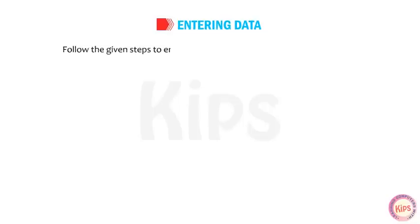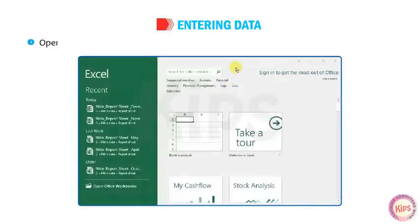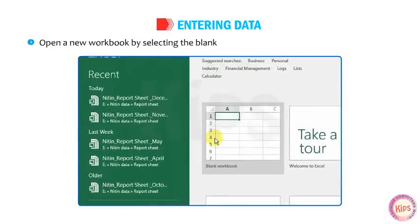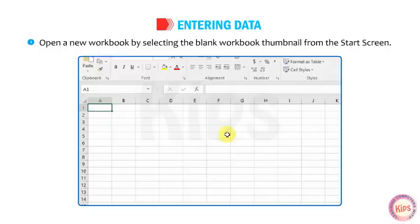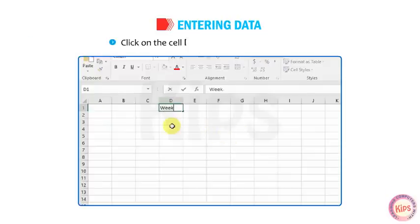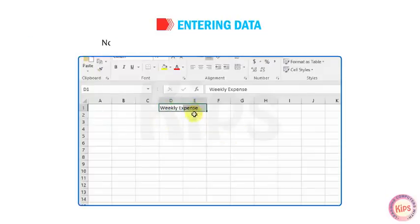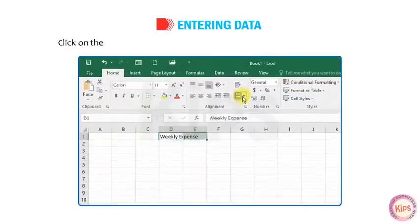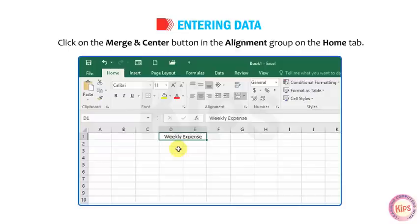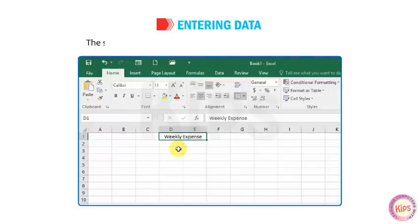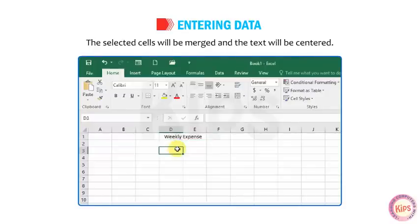Let us learn how to enter data. Follow the given steps to enter data in a worksheet. Open a new workbook by selecting the blank workbook thumbnail from the start screen. Click on cell D1 and type 'Weekly Expense'. Now select the cell range where you entered the text. Click on the Merge and Center button in the Alignment group on the Home tab. The selected cells will be merged and the text will be centered.